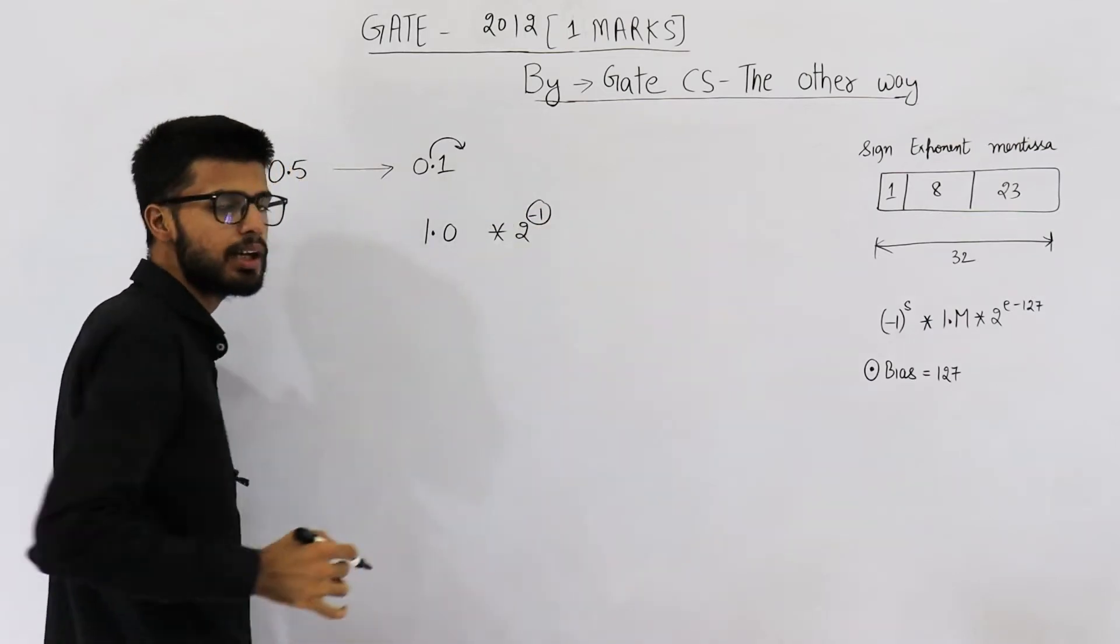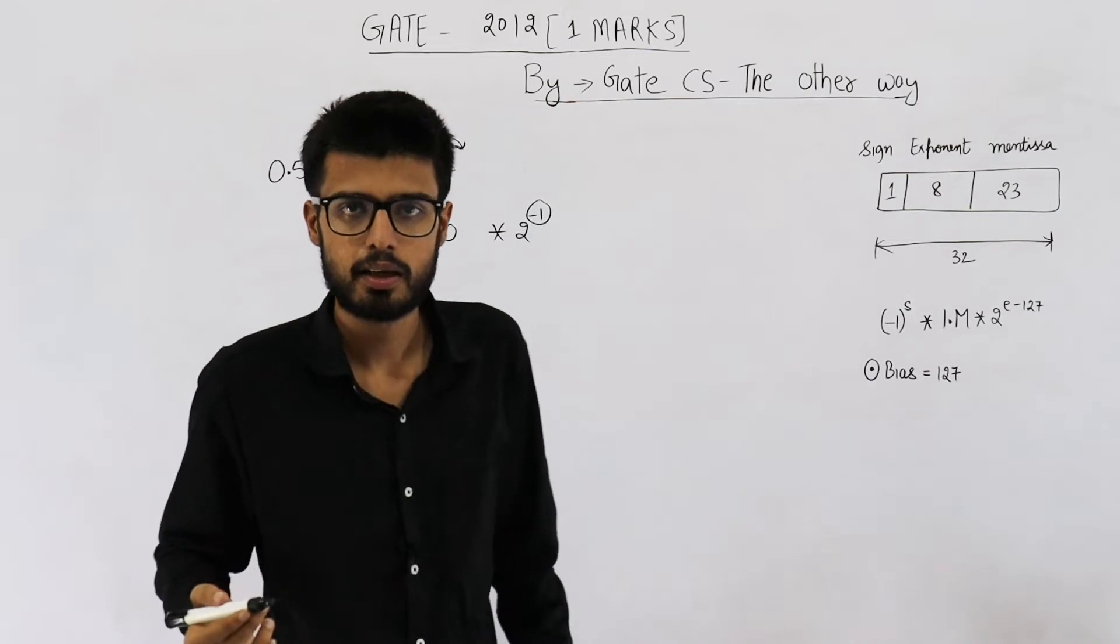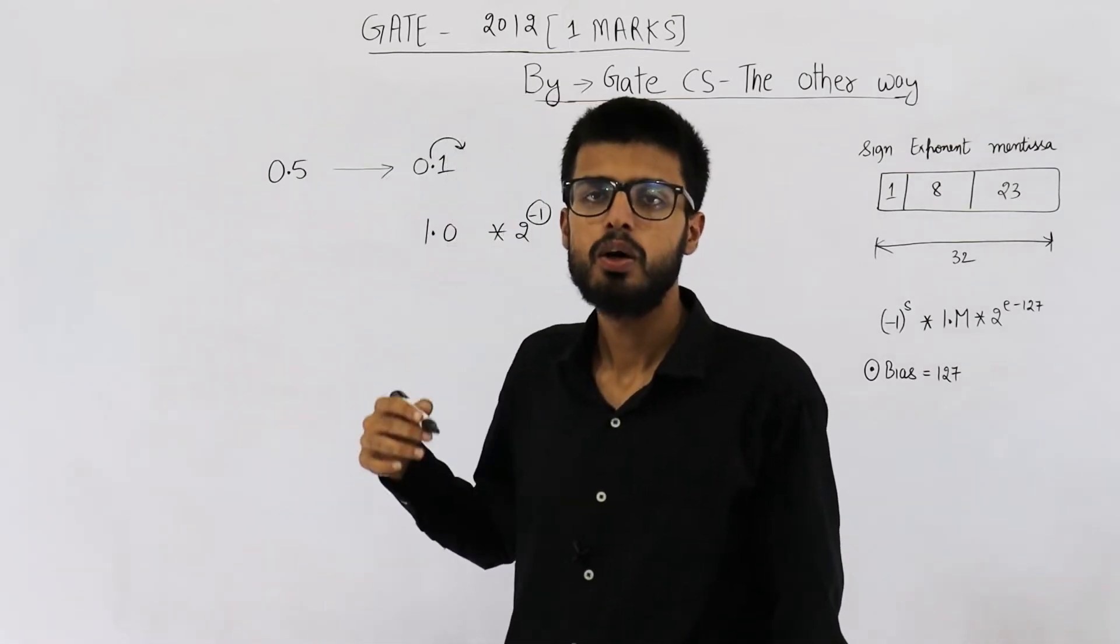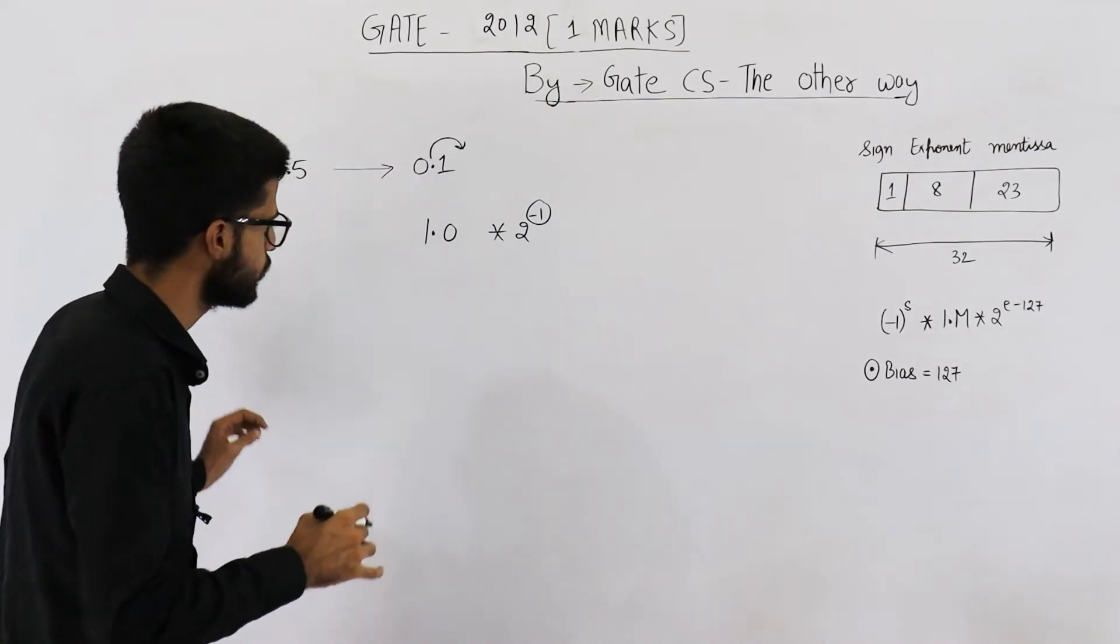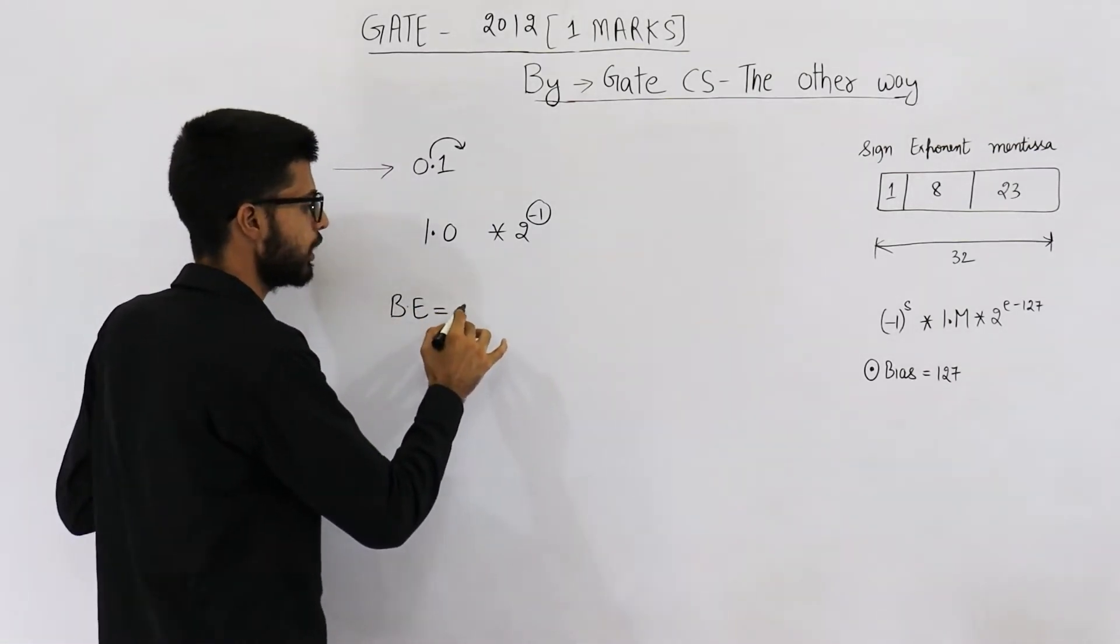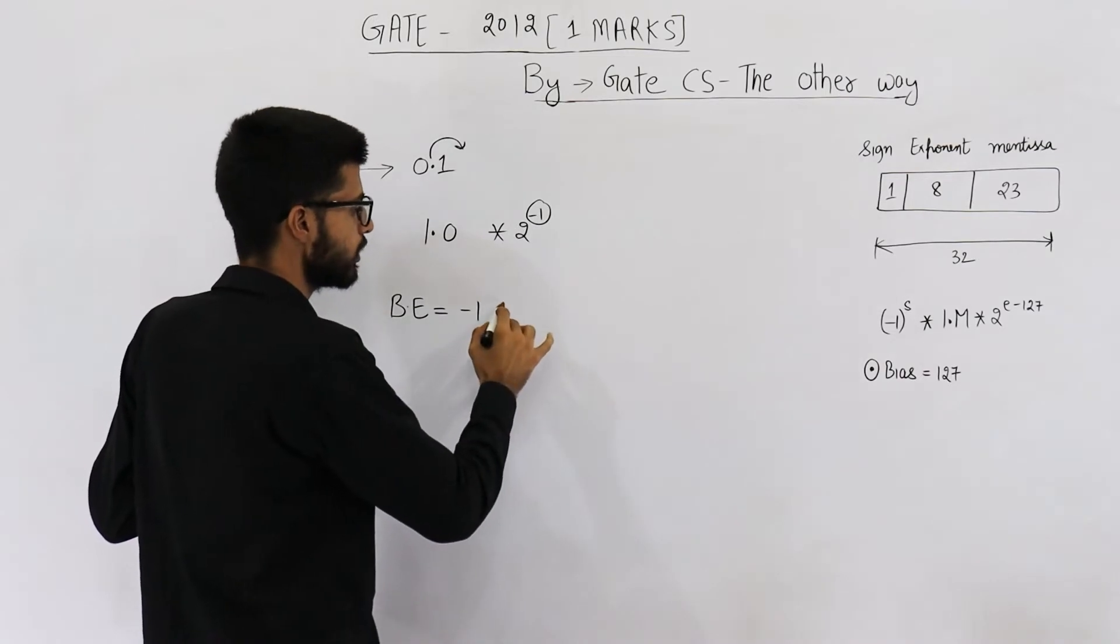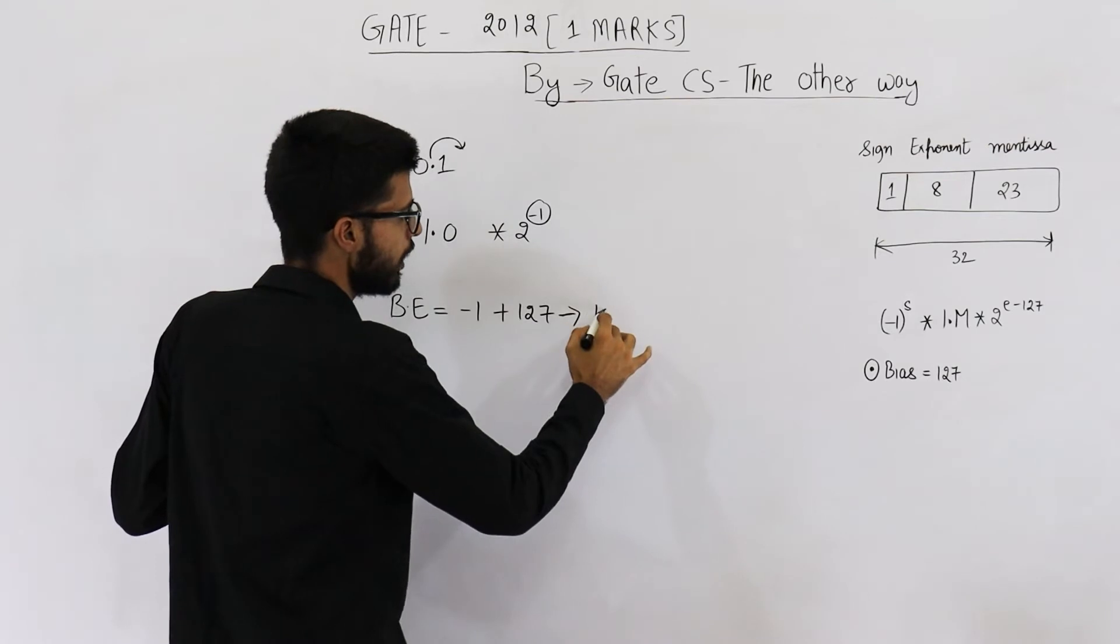Now, minus 1 is actual exponent. Whenever we save something in 32-bit single precision representation, we add a bias of 127 into the exponent. So biased exponent is minus 1 that is actual exponent plus 127. This comes out to be 126.